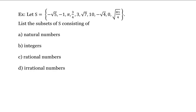Remember that the natural numbers are the counting numbers: 1, 2, 3, 4, and so on. Looking at S, we see we have 3 and 10. So these will be our natural numbers.